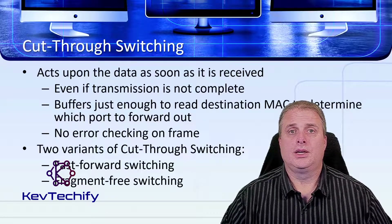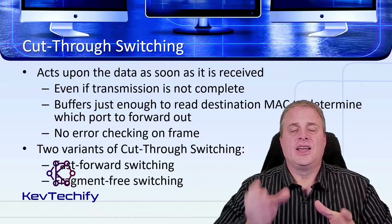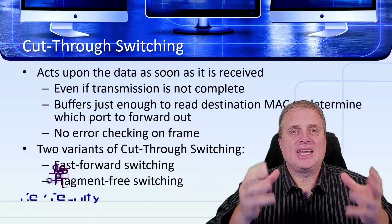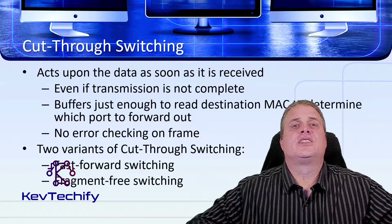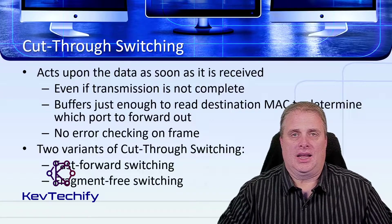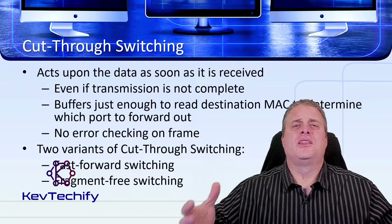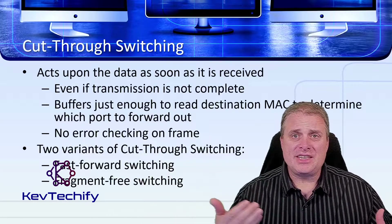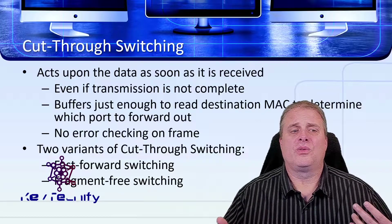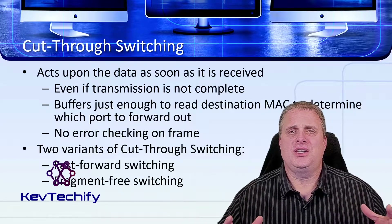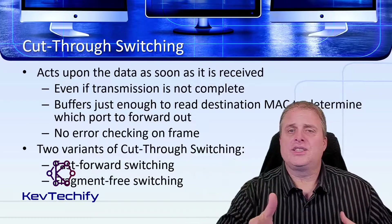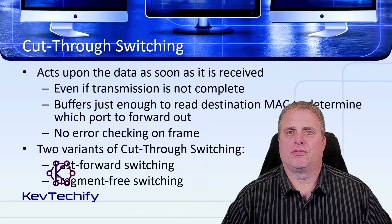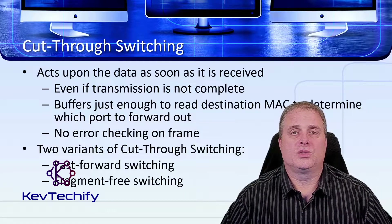Cut-through switching reacts to the data as soon as the header is in. As soon as that destination MAC address is in, the switch receives it and starts processing that data — even before it has received all of it. So potentially it could still be receiving the frame while already sending it out. It buffers just enough information to see where the frame is going, reads the destination MAC address, and sends it out the right port. There is no error checking with this whatsoever.